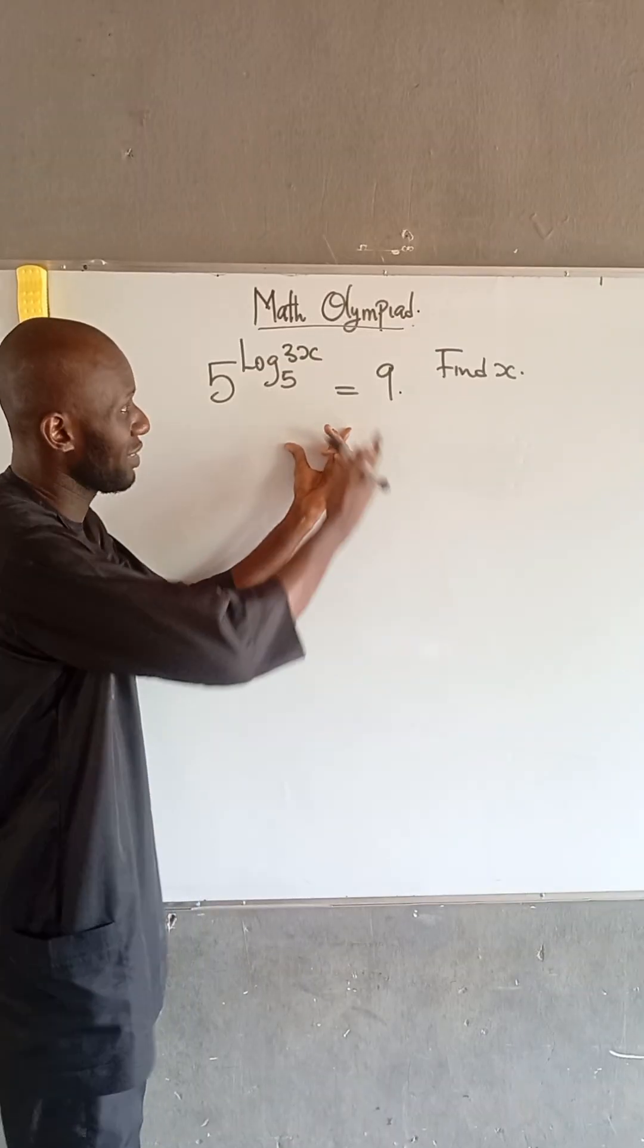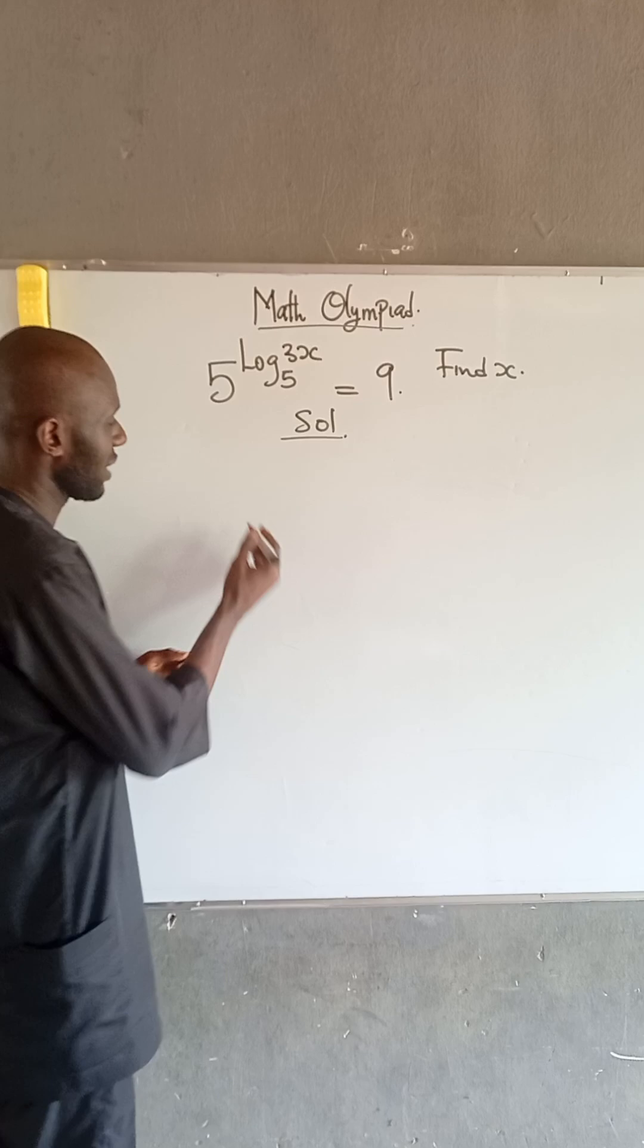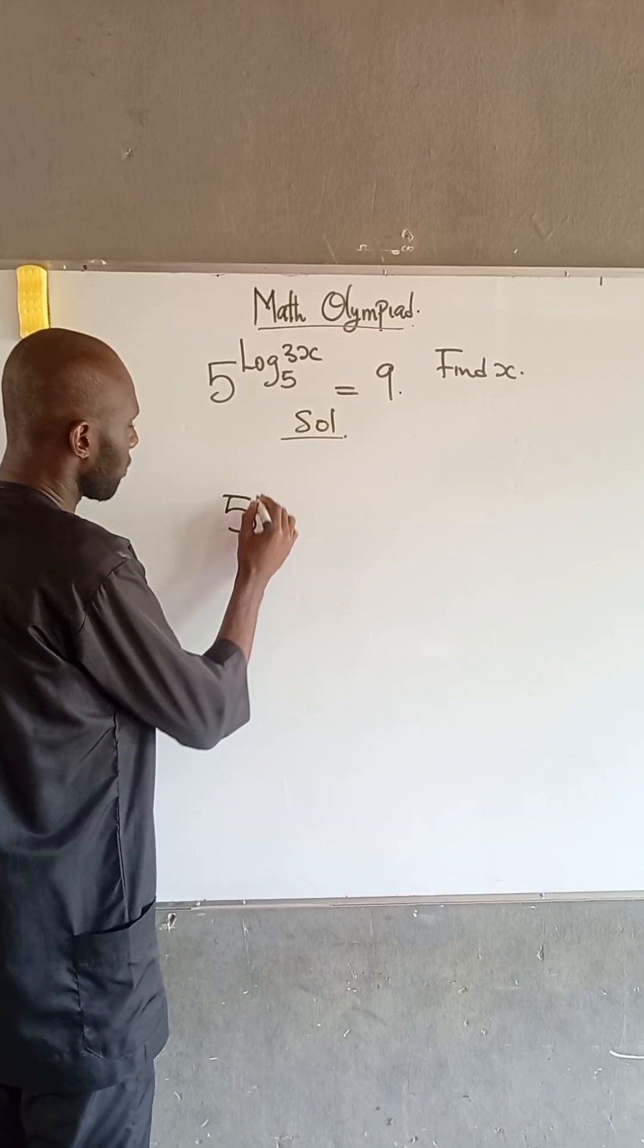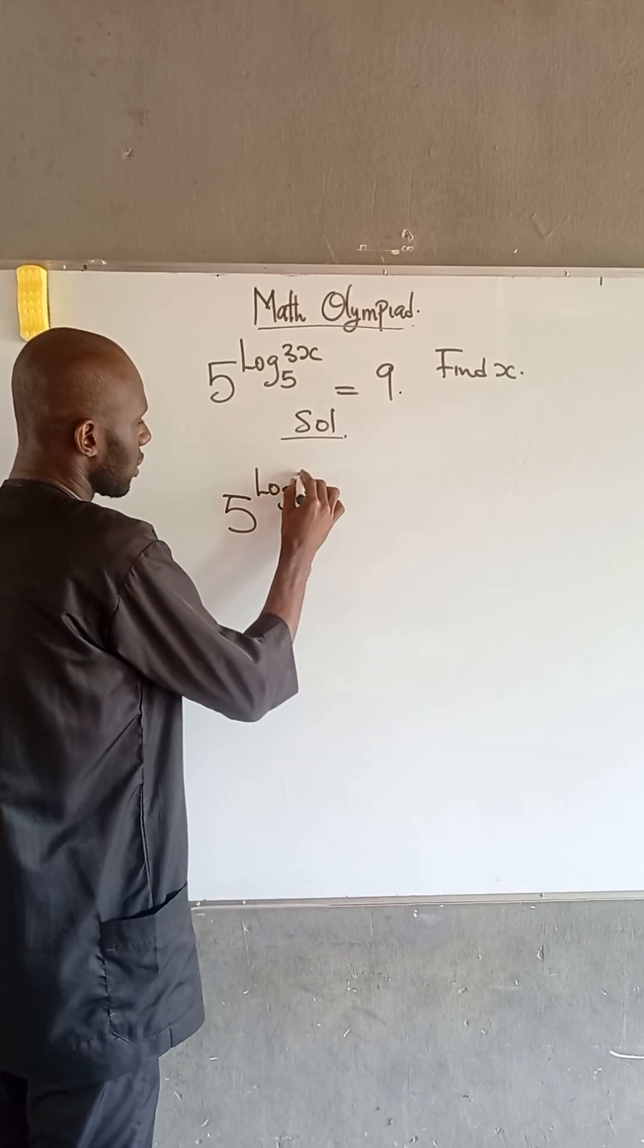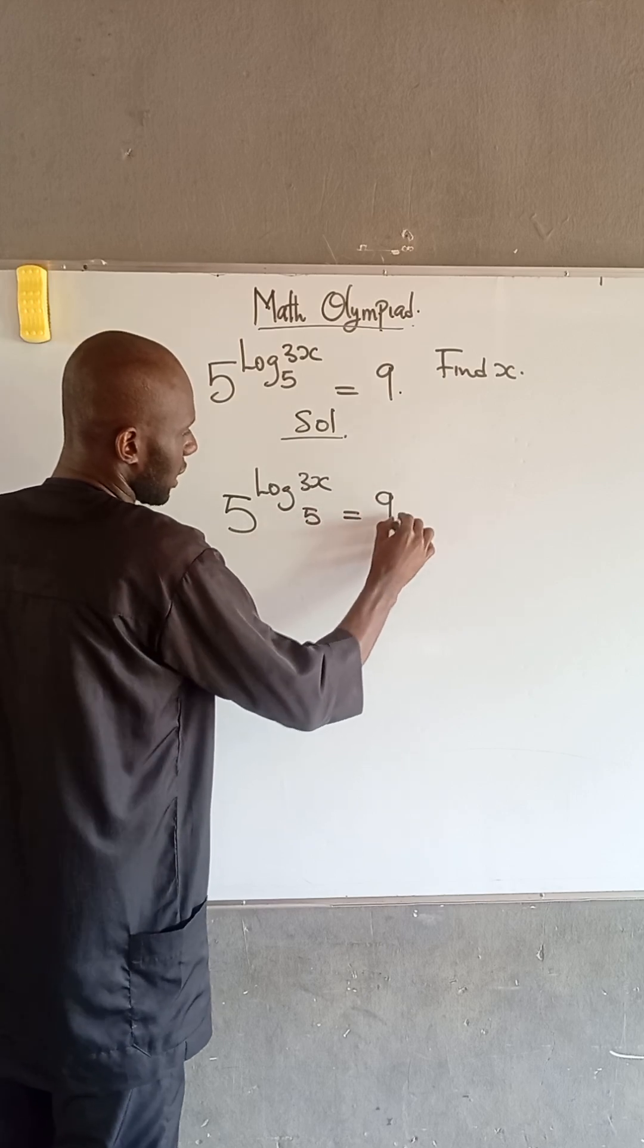Come let me show you how to solve this kind of simple math Olympiad question. We are given that 5 with the power of log 3x in base 5 is equal to 9.